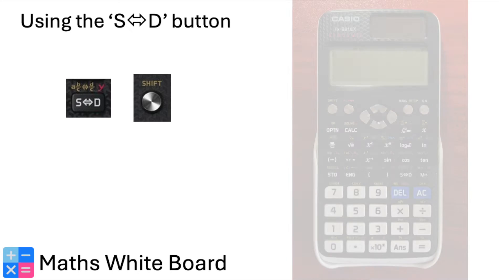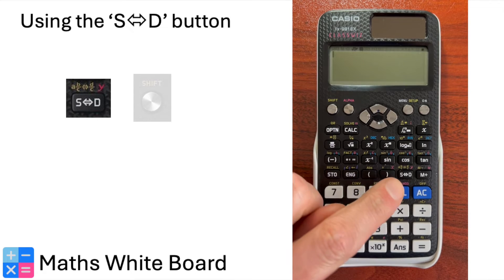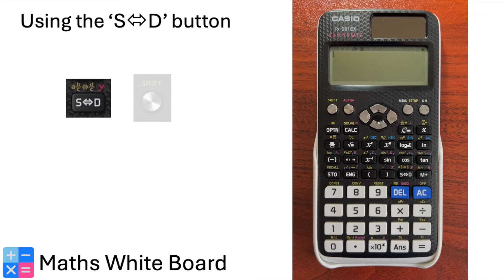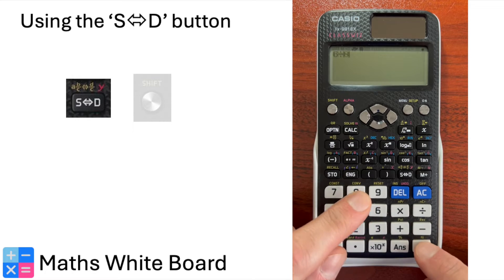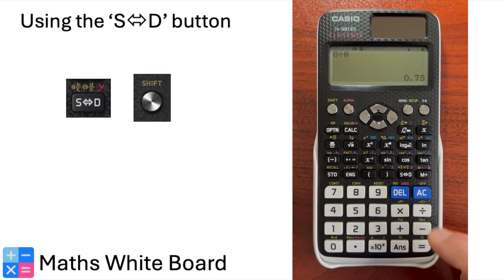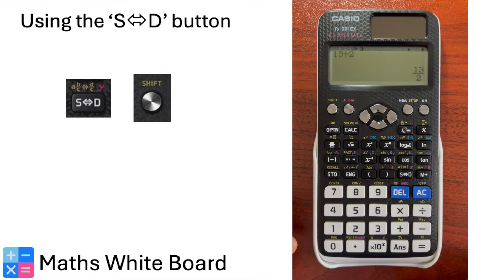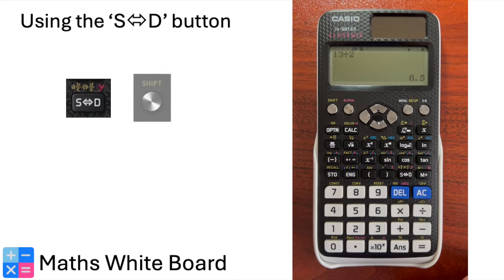In this instructional video, we will explore how to use the standard to decimal form button on your scientific calculator. Locate the standard to decimal form button — it's often labelled as SD. After entering a calculation that returns a fraction or a number written in standard form, press the SD button, and your calculator will display the decimal form of that number. For example, dividing 13 by 2 gives the answer 13 over 2. Now press the SD button — this will show the decimal equivalent of the improper fraction.